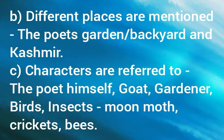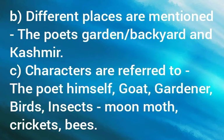Feature B: different places are mentioned in the poem — the poet's garden or backyard, where the small sapling was planted, and Kashmir, when he came back from Kashmir. These are the two places mentioned. Feature C: characters are referred to — the poet himself, the goat which ate the leaves, the gardener whose scythe cut the leaves, the birds eating the cherries, the insects enjoying the fruits, the moon moths, the singing crickets, and the bees who in ecstasy drank the fluid from the fruits. Thus there are many characters in the poem.